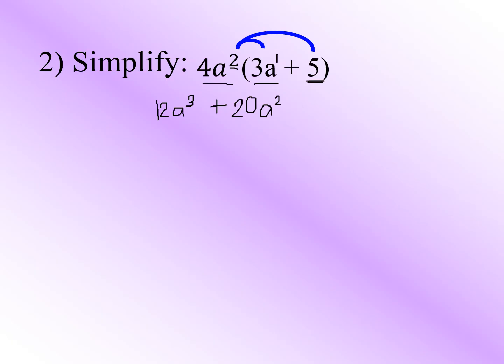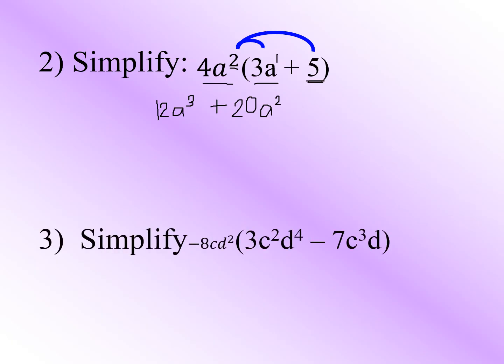Now let's have our third example. Simplify: negative 8cd² times the quantity (3c²d⁴ minus 7c³d). We will distribute negative 8cd² to the terms inside the parentheses.